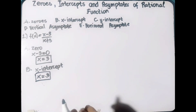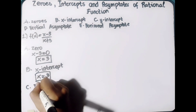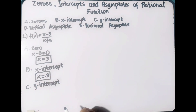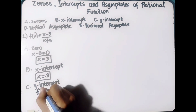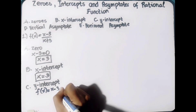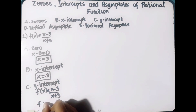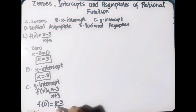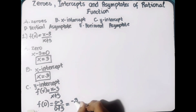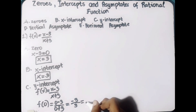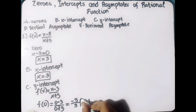Next is the y-intercept, which can be solved by substituting x with zero. f of 0 equals 0 minus 3 over 0 plus 3, which equals negative 3 over 3, which equals negative 1. Therefore, negative 1 is the y-intercept of the function.